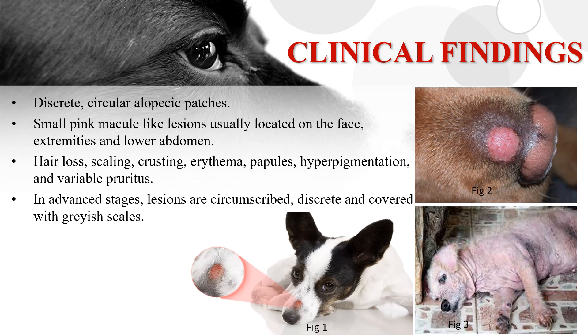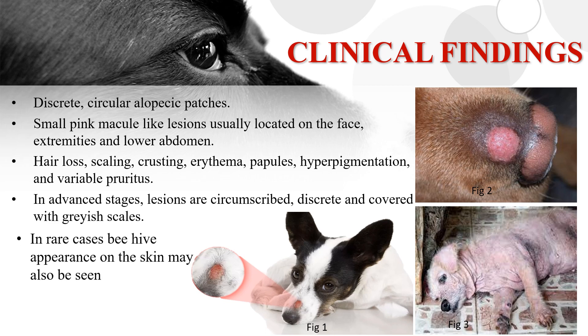In advanced stages, lesions are circumscribed, discrete, and covered with grayish scales. In rare cases, a beehive appearance on the skin may also be seen. Nodular lesions, known as kerion reactions, can also develop.